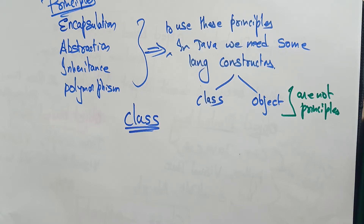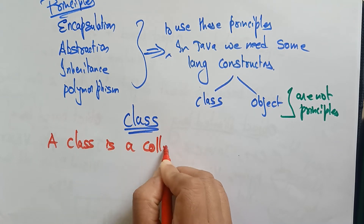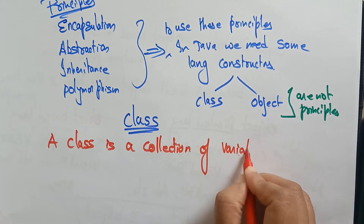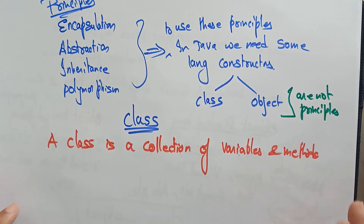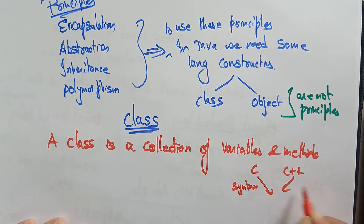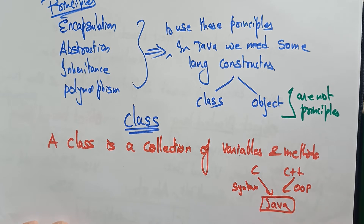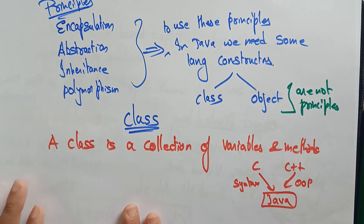So what is a class? A class is a collection of variables and methods. You all know C and C++ — Java uses the syntax of C and the OOP principles of C++. So a class is a collection of variables and methods, and the same variable and method representations used in C are used here as well.